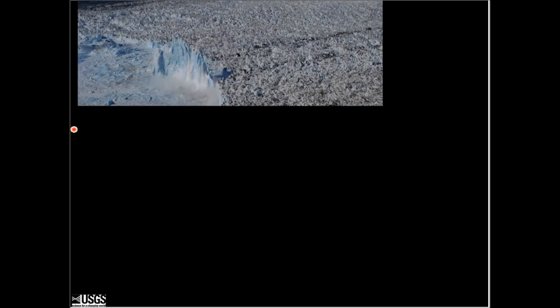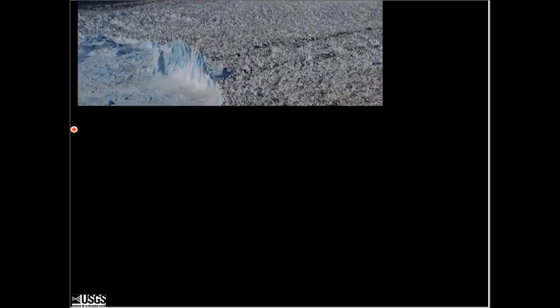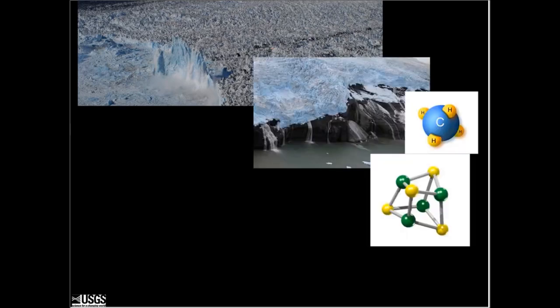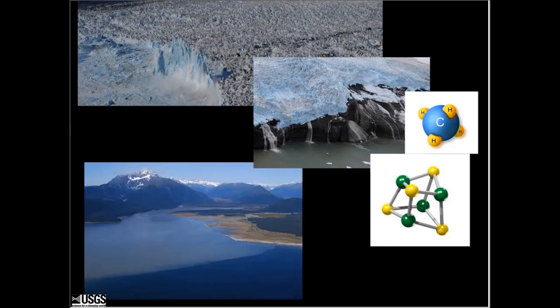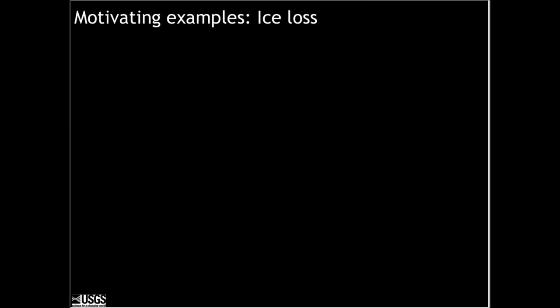We'll go through the glaciers to the streams, look at the geochemistry in the streams, and then how the geochemistry is impacting the ecology — from the glaciers to the streams, look at the chemistry in the streams, make it down to the estuary where the animals at the core of the ecology are. So that's the overview of the talk.